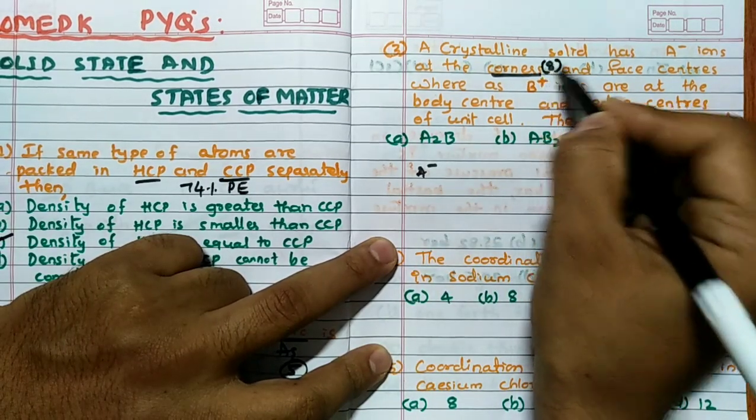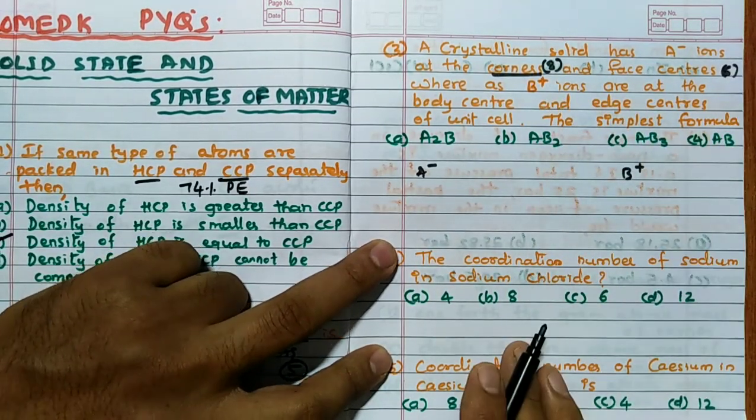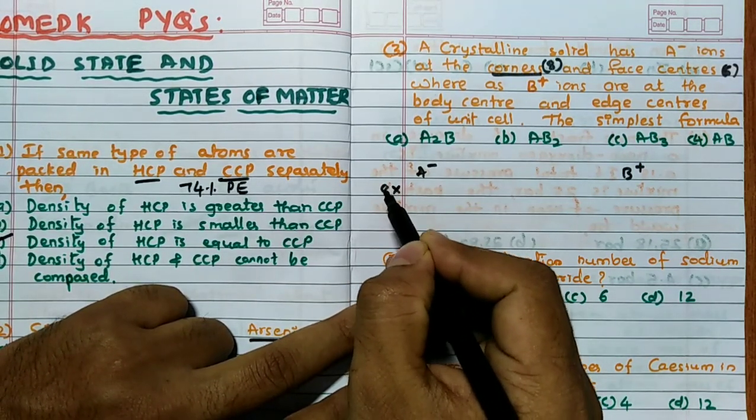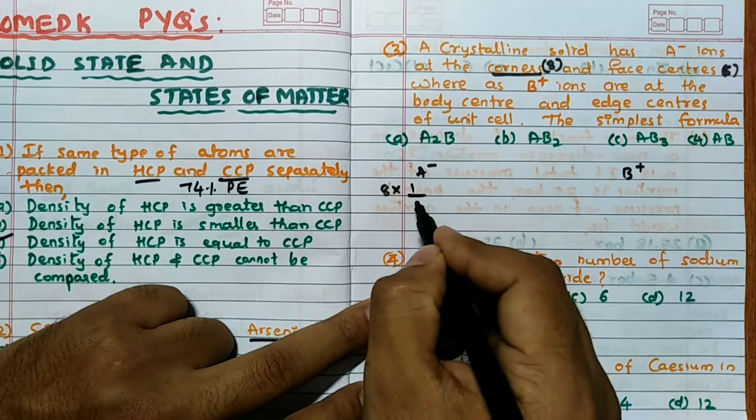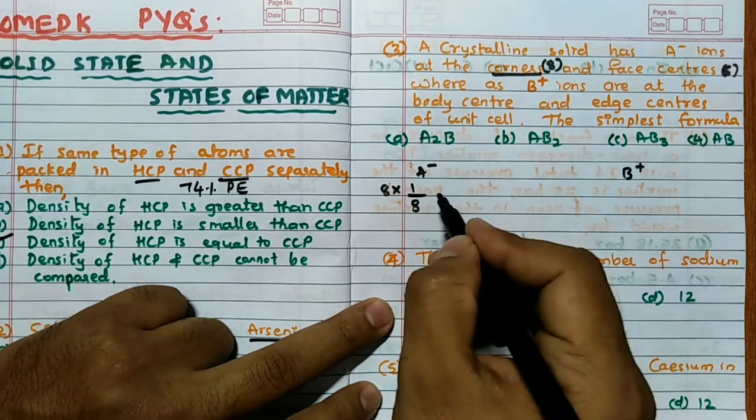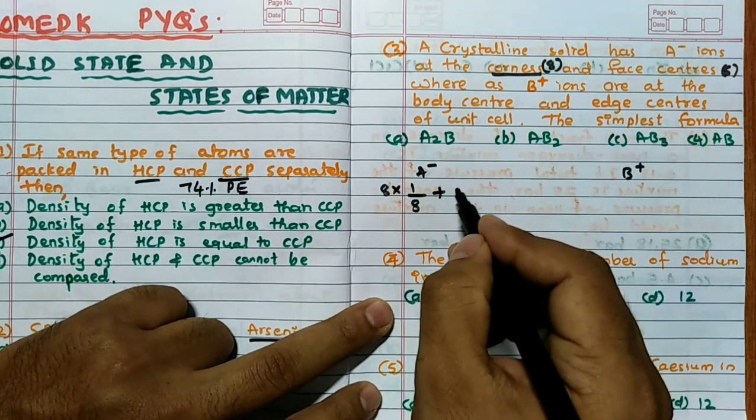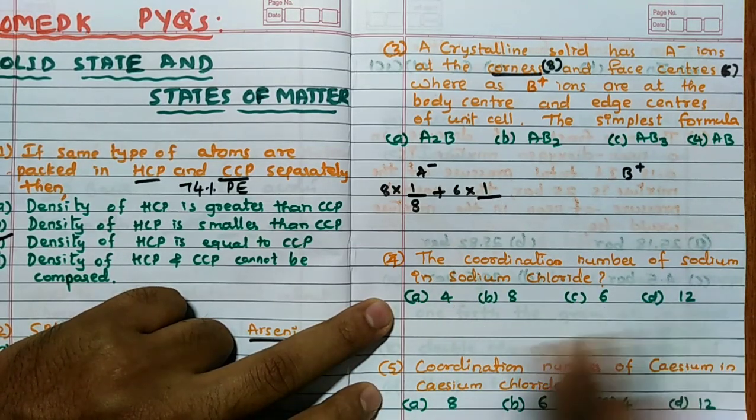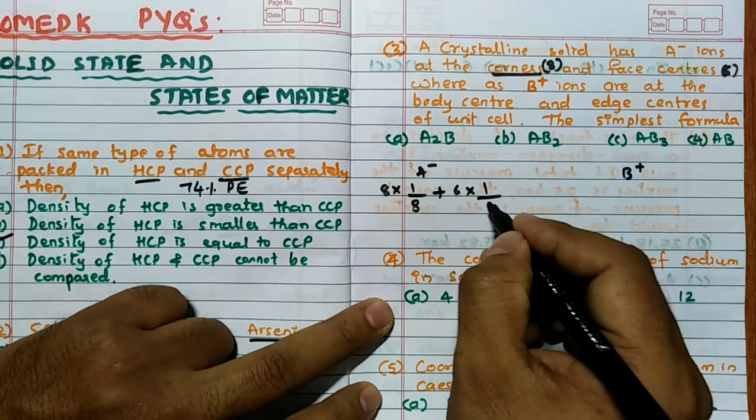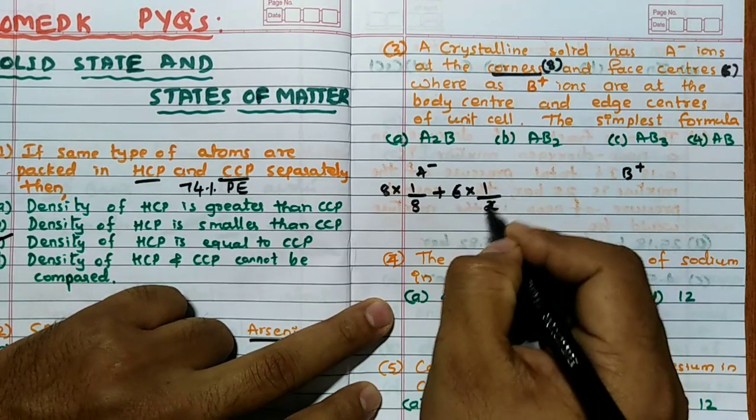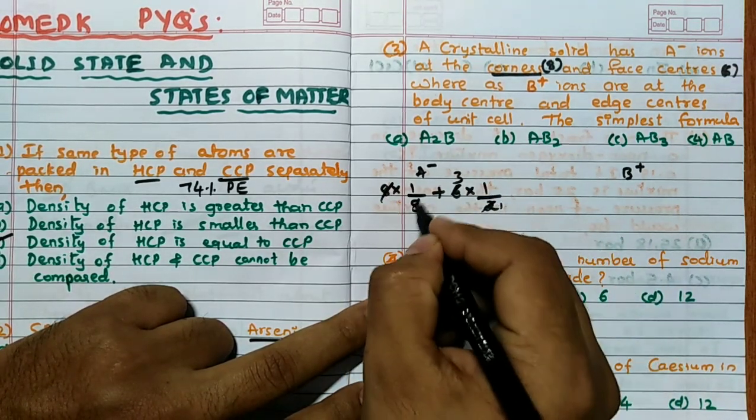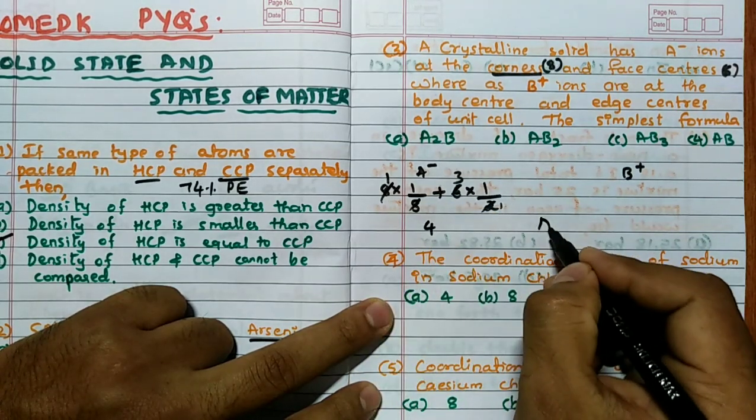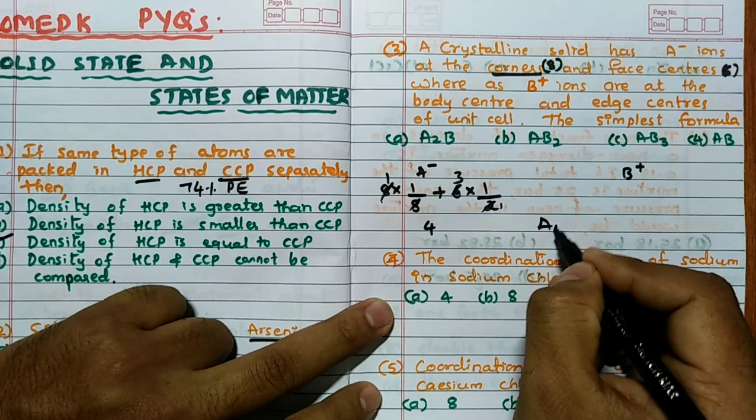Corner number is how much? 8, correct. Face centers are how much? 6 are there. So 8 corners, 1 corner is shared by 8 unit cells, so 1/8 plus, remember 6 face centers. We know that 1 face is shared by 2 unit cells, so it is divided by 2. So hence it is 1 plus 3 is 4. So I can write it as A minus is 4.